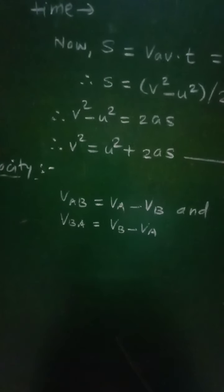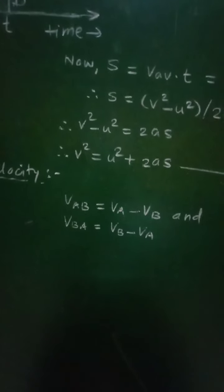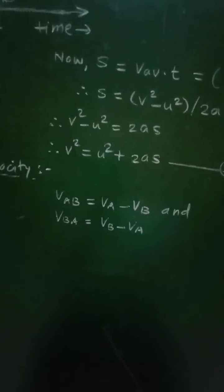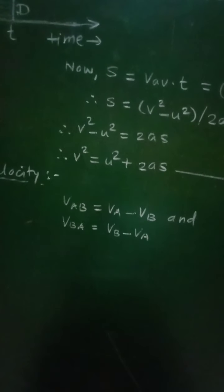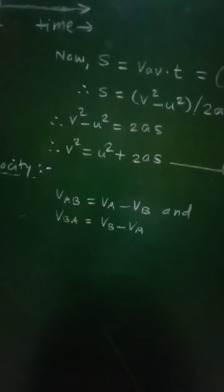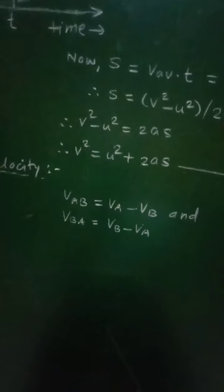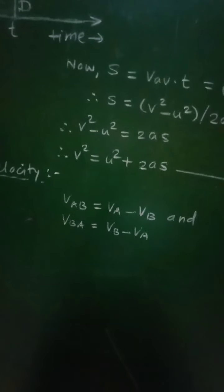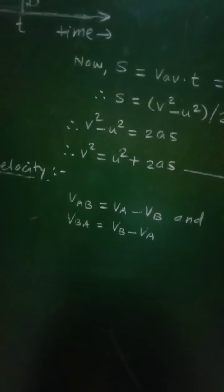Now, if at time t = 0 both A and B are at the same point, that is at x = 0, then as they travel with different velocities, the distance between them will go on increasing with time in direct proportion to the difference in their velocities — that is, the relative velocity between them.